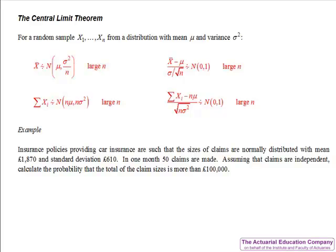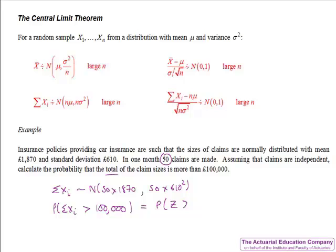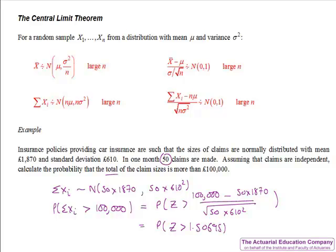Note that the question doesn't say an approximate probability because the central limit theorem is exactly true when sampling from a normal distribution. Using the summation form of the central limit theorem, the sum of Xi's is normally distributed with n equals 50 times the original mean of 1870, and n times the original variance of 610 squared. Standardising the probability that the total exceeds 100,000 gives Z greater than 1.50695, and using interpolation gives a value of 0.06591.